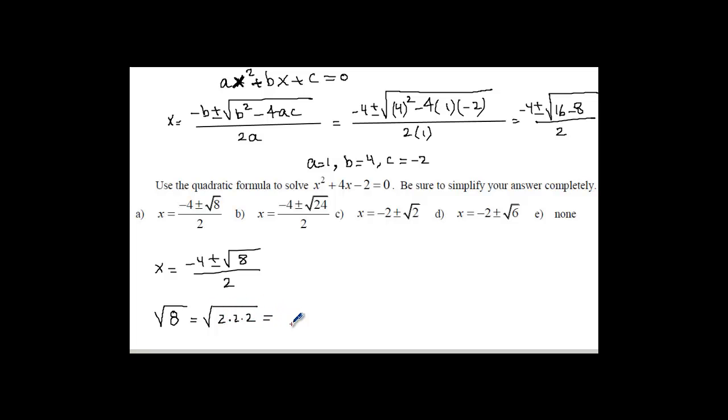So square root of 8 would be 2 × 2 × 2, which is 4 × 2. Part of 8 is completely squared, right? So we get 2√2. So I'm going to replace √8 with 2√2 / 2.